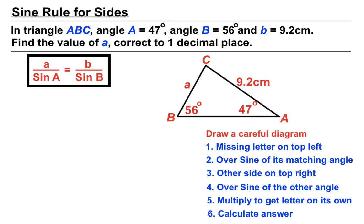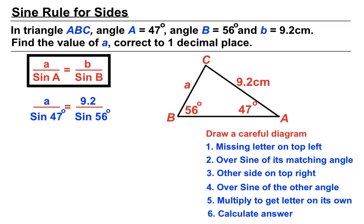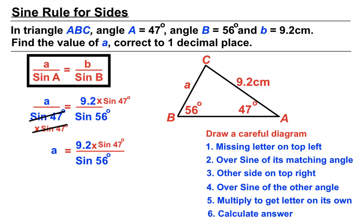The angle matching A is 47 degrees, so along with the sine we'll have sin 47 on the bottom left. The other side is 9.2cm on the top right, and that side is closely related to the angle of 56 degrees, so we put sin 56 on the bottom right. To get the letter on its own, we multiply by sin 47 on both sides — that cancels out on the left-hand side, leaving just A. Then we put that straight into our calculator.